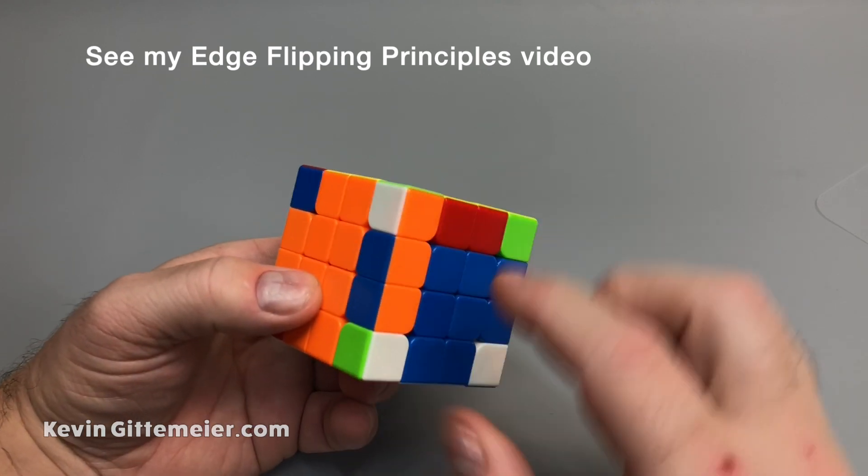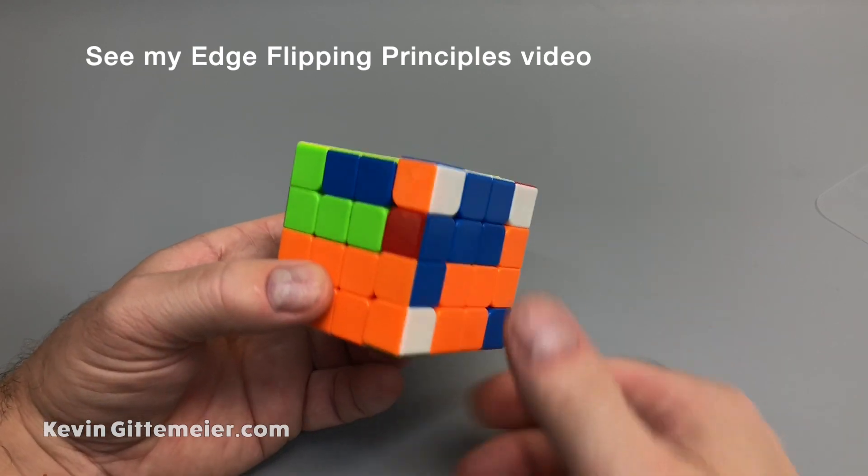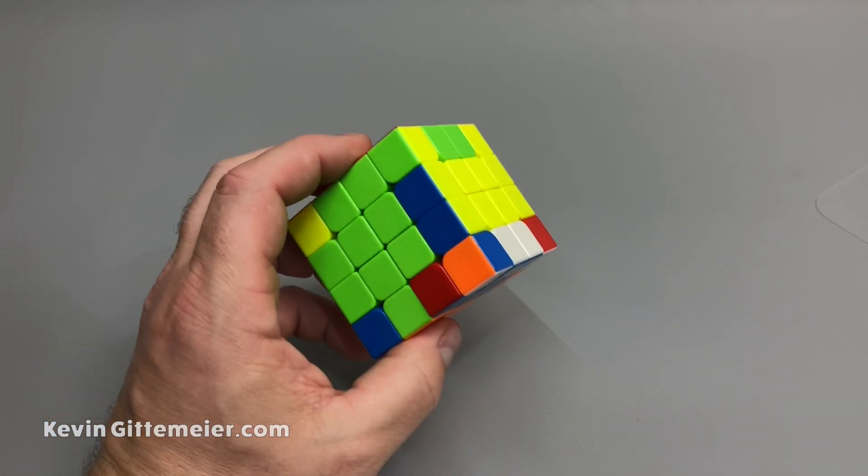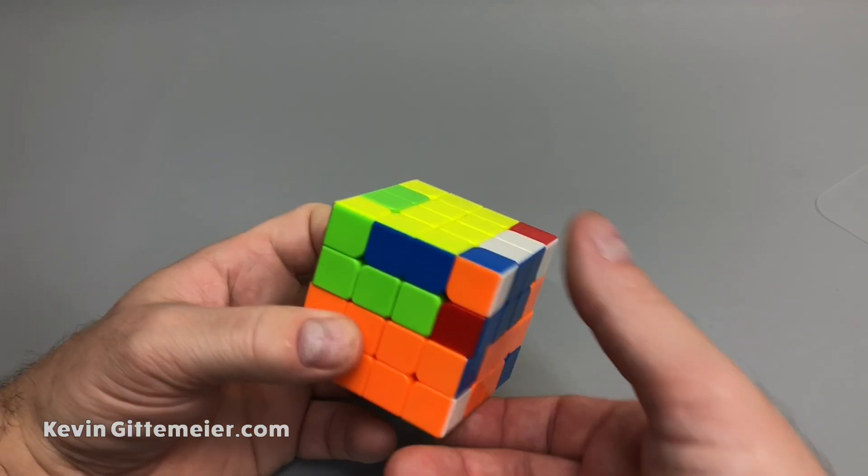And then they're solved. But this is the reason when we talked about beginner flipping in another video of just turning the side but it rotates your center - this is the reason we can't just do that, because now my centers are messed up.